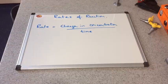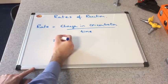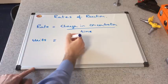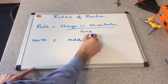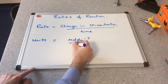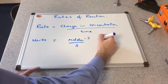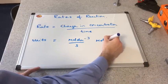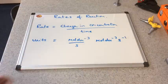Now because that is the expression for rate, the units of rate would be moles per decimetre cubed over seconds. Bringing the seconds up to the top it would be mole dm⁻³ s⁻¹.